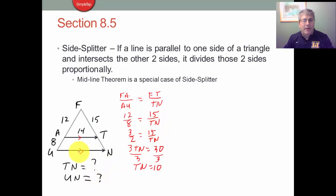Now, finding UN is a little bit different. We can't use that same proportion. We can't use 12 is to 8 because the 8 is not the entire side of the triangle.